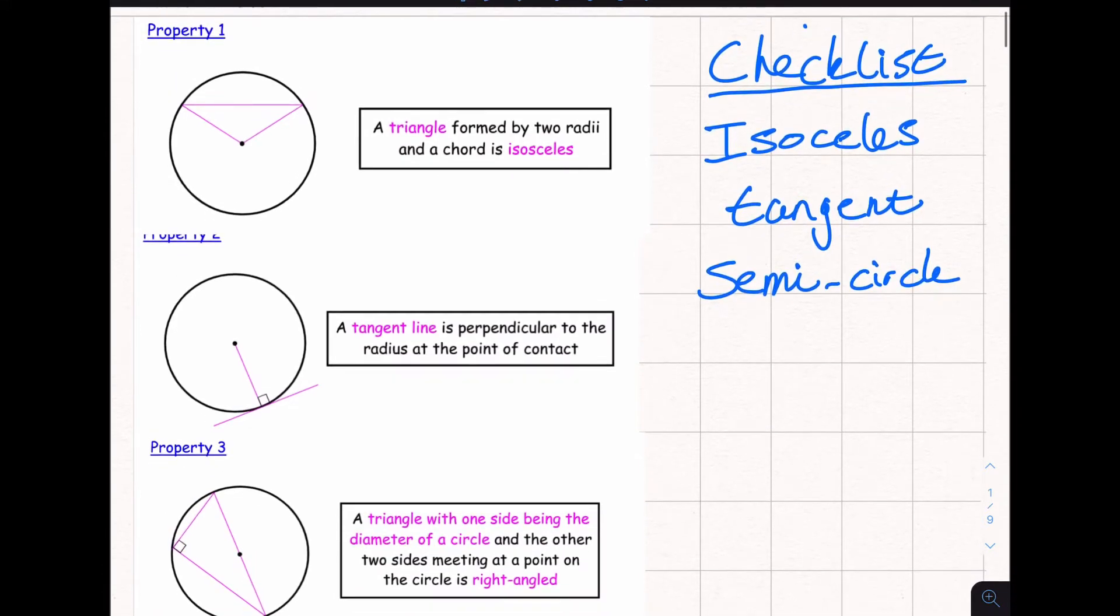Now we can summarize that in a little checklist and I usually like to use isosceles to remind me of the isosceles property, tangent to remind me of the tangent property and semicircle to remind me of the semicircle property and I'll always use this checklist from now on in questions involving these types of properties. So let's go on here about three or four examples and then give you some work to try.